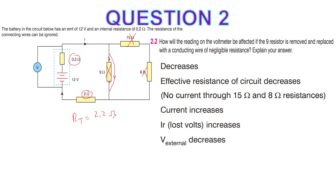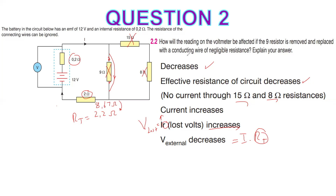What's going to happen now? Total resistance decreases — it was 8.67, now it changes to 2.2. So effective resistance decreases, and there is no current through 15 ohms and 8 ohms. Current increases because resistance decreased. V_lost equals I times r, so it also increases. V_external decreases because I times R_total decreases. The answer is: voltmeter reading decreases.